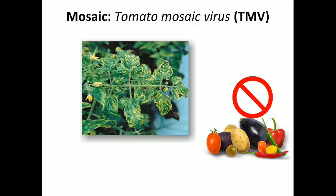Next disease is mosaic, caused by Tomato Mosaic Virus (TMV). Symptoms include light and dark green mottling on leaves; leaves become puckered and smaller, leading to fern leaf symptoms — smaller than normal leaves. The virus spreads by contact through clothes, hands of working laborers, touching infected plants with healthy ones, or via implements. Avoid solanaceous plants as hosts.